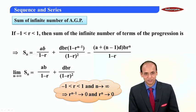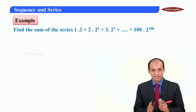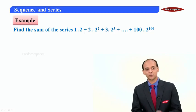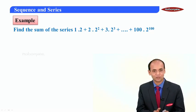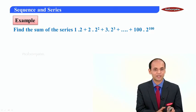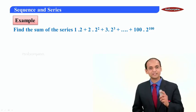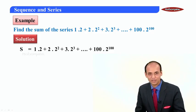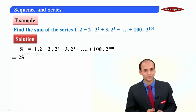Let us use these concepts to solve a question. Students, I have to find the sum of the series 1·2 + 2·2² + 3·2³ and so on. Let us check — is this an AGP? Looking at each term: 1, 2, 3... form an AP, and 2, 2², 2³ till 2¹⁰⁰ form a GP. Therefore these terms constitute an AGP. To find the sum, we multiply the complete series by the common ratio of the GP, which is 2.